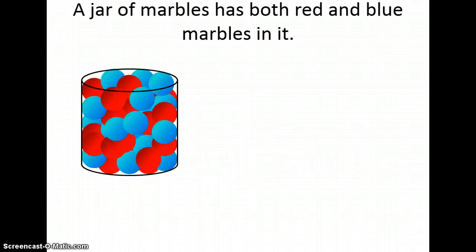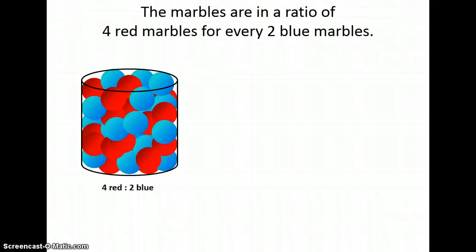Let's begin by thinking of a jar of marbles that has red and blue marbles in it. The marbles are put in in a ratio of four red marbles for every two blue marbles. So that means they're going to put in four red marbles, then two blue marbles, then another four red marbles, and another two blue marbles. Every time four reds go in, two blues also go in.